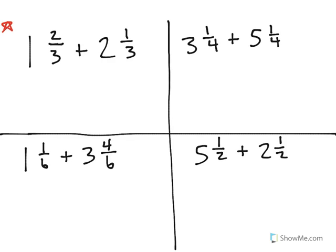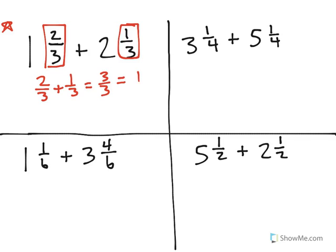1 and 2/3 plus 2 and 1/3. An easy way to add these together is to add fractions first, and then add the whole numbers. So when I add 2/3 plus 1/3, I know that's equal to 3/3. 3/3 is the same thing as one whole. So those two fractions have combined to equal one whole.